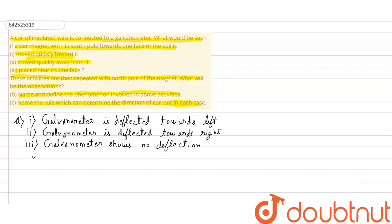The observations with the north pole will be vice versa of the south pole — the deflections will be in the opposite directions.